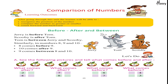Jerry is before Tom; Scooby is after Tom. Tom is between Jerry and Scooby. Similarly, in numbers: eight, nine, ten — eight comes before nine, ten comes after nine, nine comes between eight and ten. Let's do: see the following pictures and tell what comes before and after.